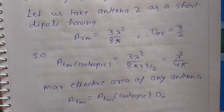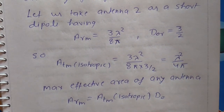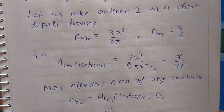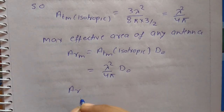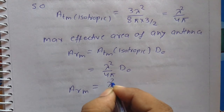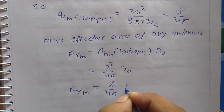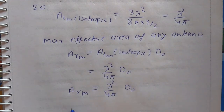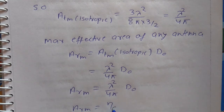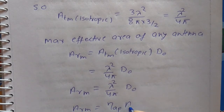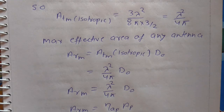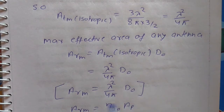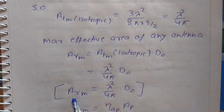ATM isotropic is λ² divided by 4π into D₀. So the maximum effective area of any antenna ARM is equal to λ² divided by 4π into D₀. Alternatively, ARM is equal to aperture efficiency into AP, where aperture efficiency is the ratio of the effective area divided by the physical area. We have thus proved the relation between maximum effective area, maximum aperture area, and the directivity of the antenna.